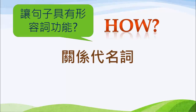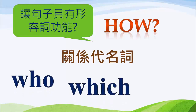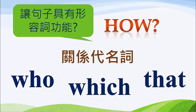那我們就要介紹今天所要提到的關系代名詞。什麼是關系代名詞？關系代名詞我們可以粗略界定為 who、which、that 三個字。同學們以前應該都學過 who 叫「誰」，which 叫「哪一個」，that 叫「那一個」。可是今天當它們做關系代名詞的時候，它們有了新的功能。